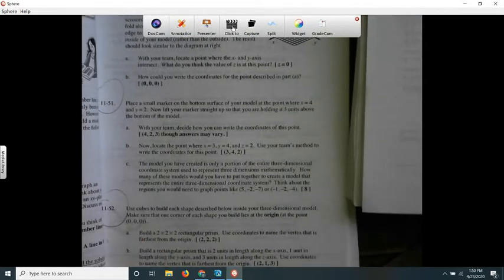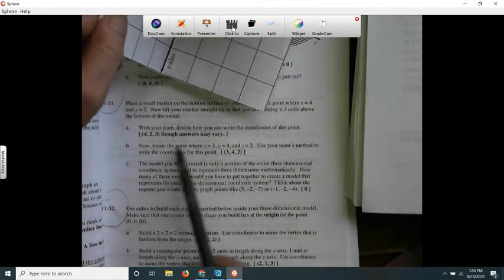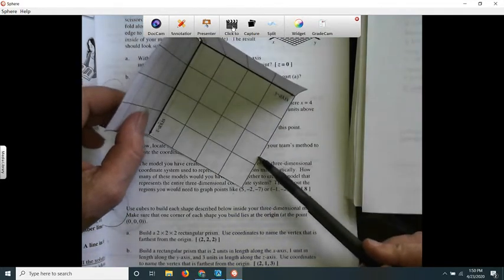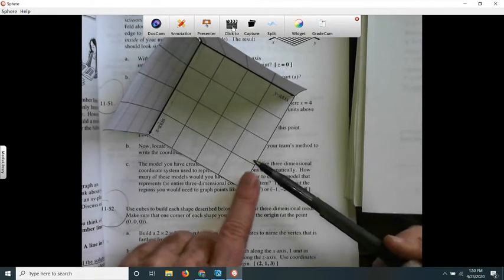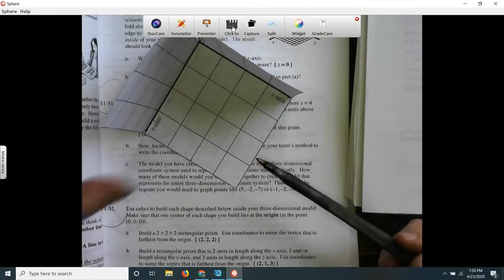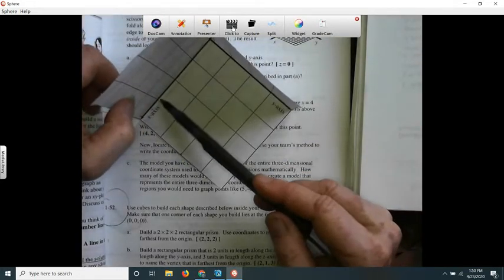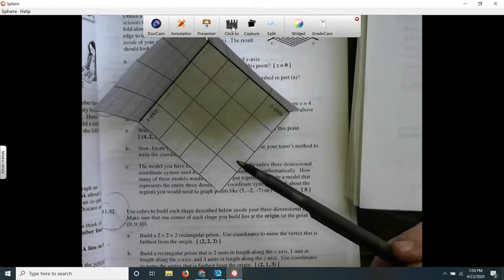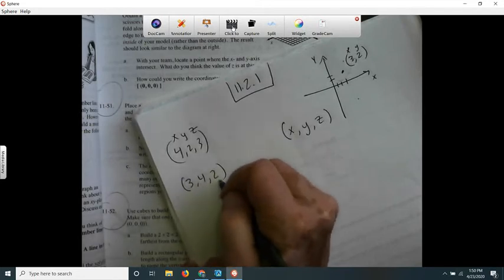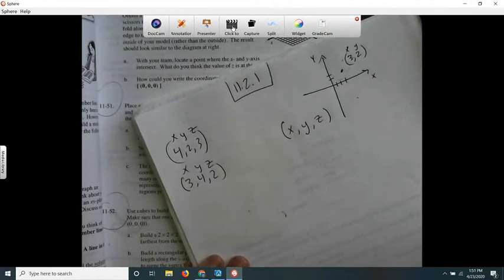And then letter B says: now locate the point where X is three, Y is four, and Z is two. So the point where X is three, Y is four, and Z is two. So I'm lifting my pencil up by two, but you can't tell. So three, four, two. I'm up two. So I've located the spot. And then how do I write it? Well, that's easy. Three, four, two. X, Y, Z. I hope that makes enough sense to you. We're going to show you how to write it on paper, on a flat paper too.